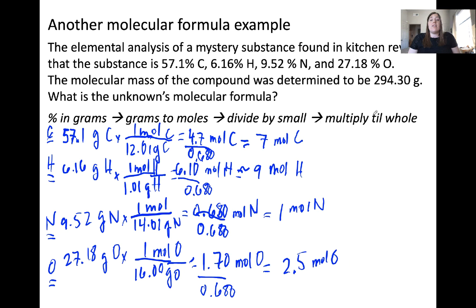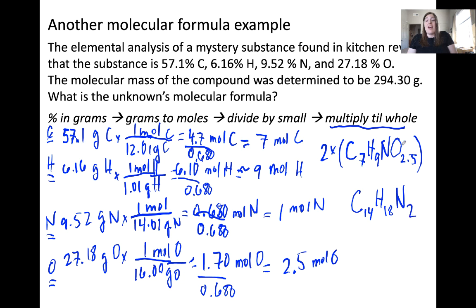Now, if I was to write my empirical formula from this information, I would have C7H9N with an implied 1, and O2.5. So I want you to think to yourself, is that possibly an empirical formula? Hopefully you're saying the answer is no, because this is not the smallest whole number ratio of atoms in the compound. You'll notice 2.5 is not a whole number. So what do I need to do? I need to follow the last step, multiply till whole. If I take this formula and multiply it by 2, what that gives me is C14H18N2O5.